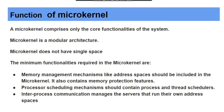Micro kernel does not have a single space; it is a modular architecture. The minimum functionality required includes memory management mechanisms like address space management, and the micro kernel contains memory protection features. For process scheduling, the process scheduler mechanism should contain processes and thread schedulers.